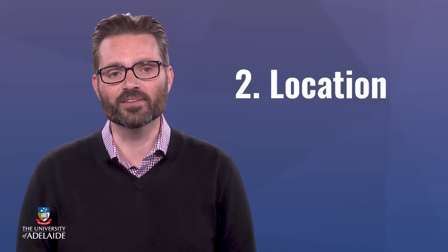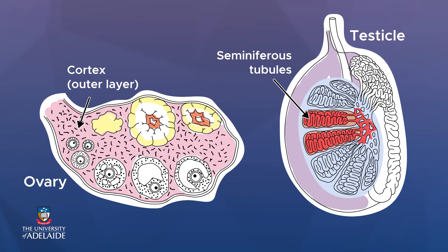Fact 2: location. Spermatogenesis occurs externally within the seminiferous tubules of the testes, whilst oogenesis occurs inside the body, in the outer layer of the ovaries.